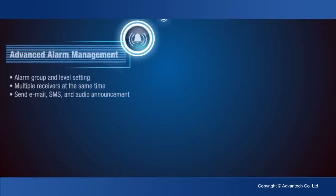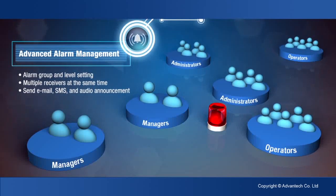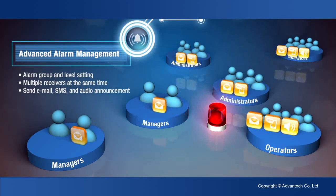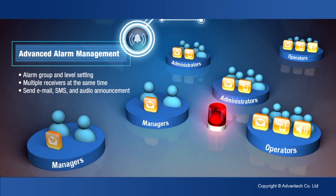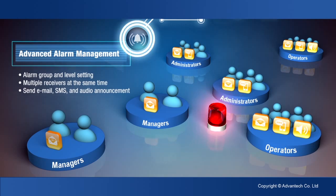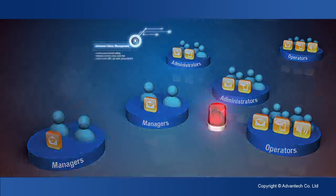The Advantech Web Access Advanced Alarm Management function provides different alarm groups and level settings to inform operators of the status of processes and equipment. Users can define alarm settings to deliver alarm messages via SMS, email, or audio announcements to multiple receivers.